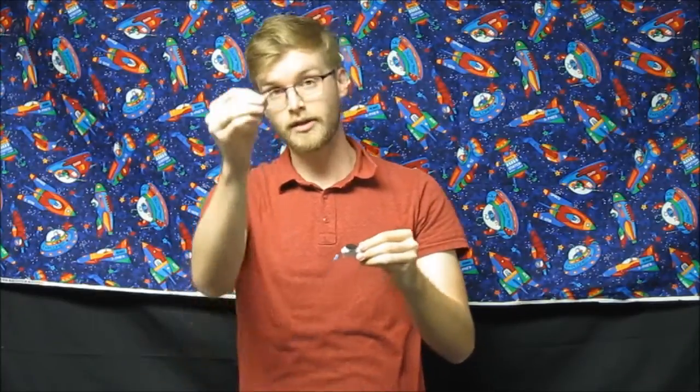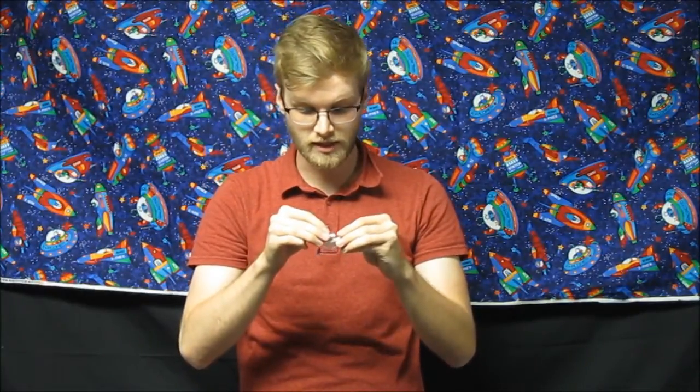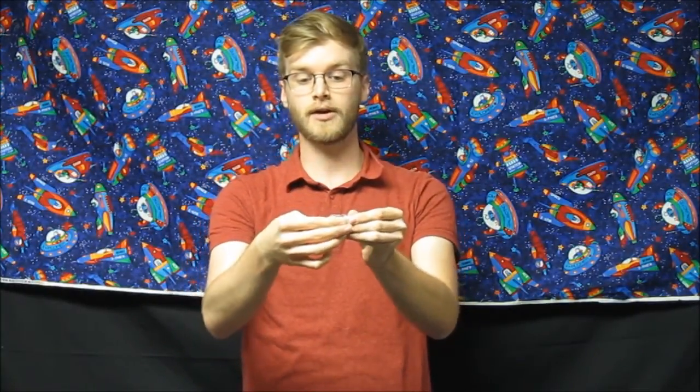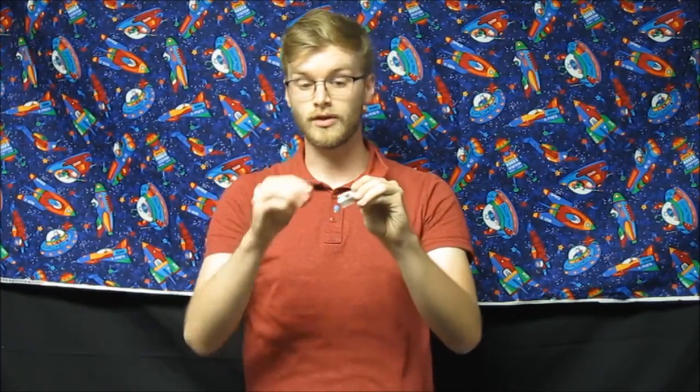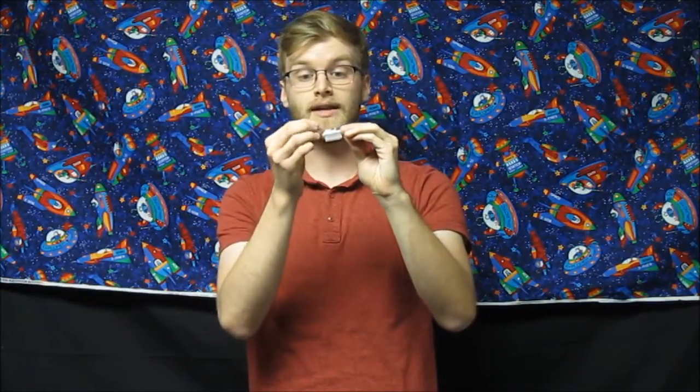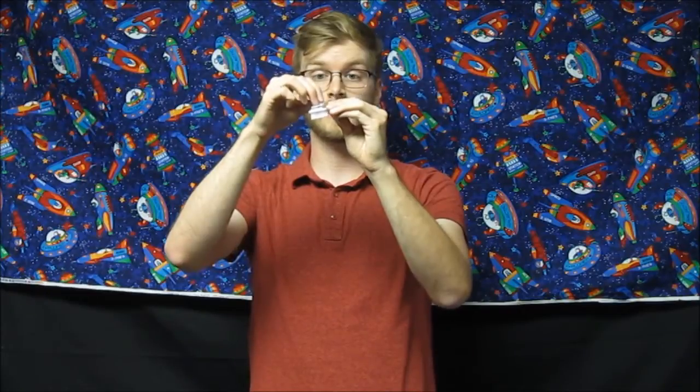Then you'll take another piece of your foam tape, stick it down on top of the battery, and then you'll take the backing off that too. Now that you've got a little sandwich between your toothbrush and your battery and your other piece of foam tape, you'll go ahead and stick the motor right on top.